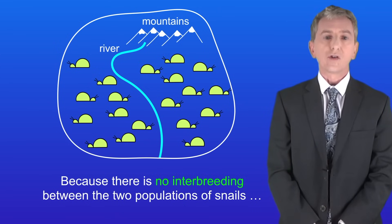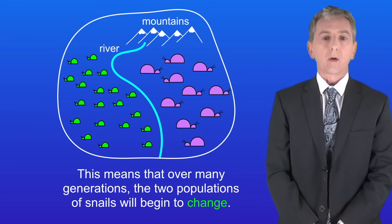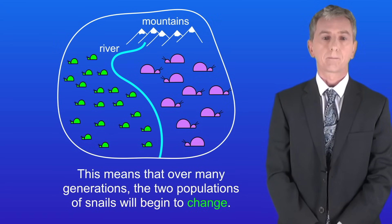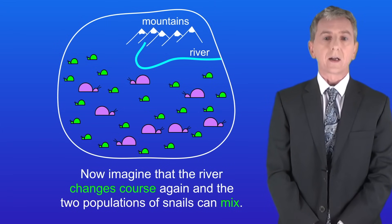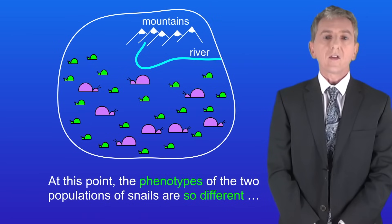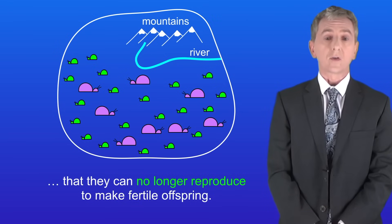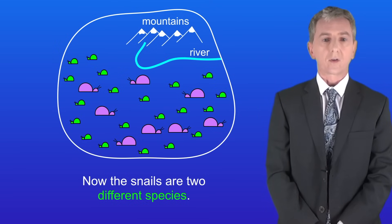Because there's no interbreeding between the two populations of snails, any mutations that occur cannot spread between the two populations. This means that over many generations, the two populations of snails will begin to change. Now imagine that the river changes course again, and the two populations of snails can mix. At this point, the phenotypes of the two populations of snails are so different that they can no longer reproduce to make fertile offspring. Now the snails are two different species.